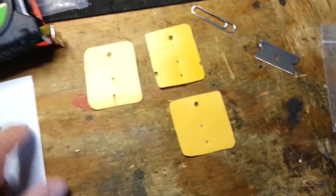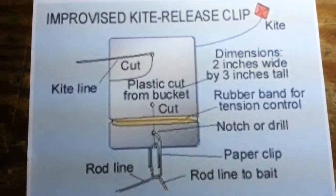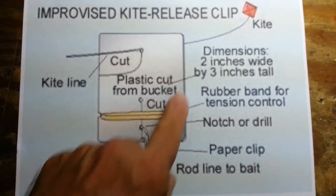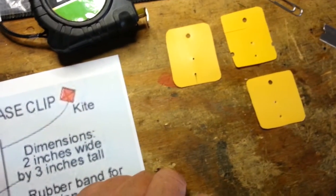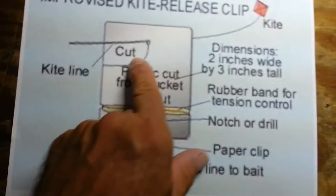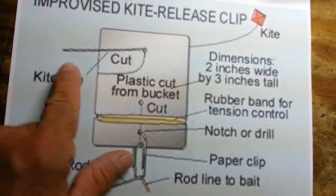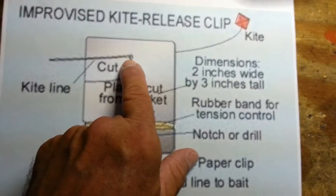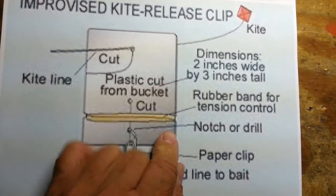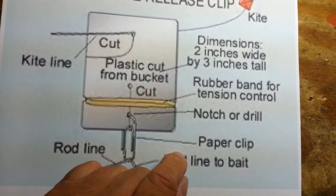Basically, you cut a two by three inch square. Mine are a little smaller, two by two and a half. You want to make a curved cut for the kite line. A lot of people put a swivel there; you can have it behind the swivel or just clip it some other way and use a simple paper clip. Here's your rod line to the bait.